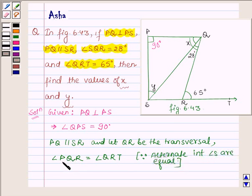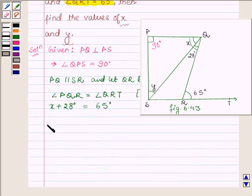Now angle PQR is equal to x plus 28 degrees and angle QRT is 65 degrees. So this implies x is equal to 65 degrees minus 28 degrees which is equal to 37 degrees. So we have x is equal to 37 degrees.